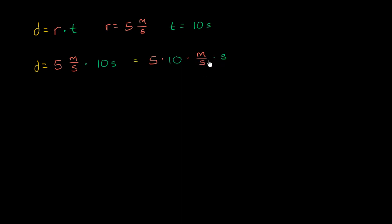And if we were to treat our units as these kind of algebraic objects, we could say, hey, look, we have seconds divided by seconds, or you have a seconds in the denominator, multiplied by seconds in the numerator, those are going to cancel out. And five times 10, of course, is 50. So we would be left with 50, and the units that we're left with are the meters. 50 meters.